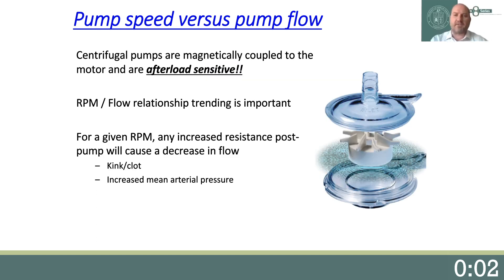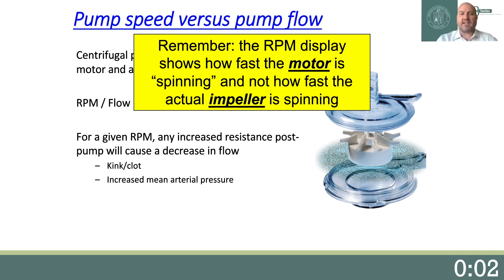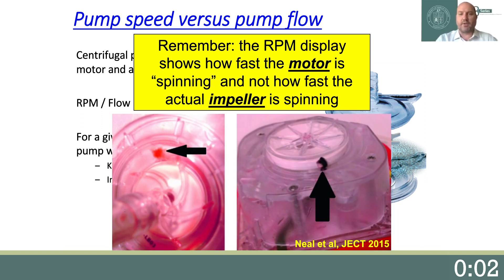Another essential concept of ECMO circuit monitoring is understanding the relationship between ECMO pump speed and ECMO pump flow. Centrifugal pumps are magnetically coupled to the motor and are afterload sensitive. Understanding and trending the RPM-to-flow relationship is important. For a given RPM, any increased resistance post-pump will cause a decrease in flow. A tubing kink, clot, or increased mean arterial pressure are some common causes of resistance that can cause decreased flow. Remember that the RPM display shows only how fast the motor is spinning, or the set speed, and not necessarily how fast the actual impeller is spinning. A clot on the impeller itself may cause drag, resulting in an actual speed lower than the set speed.